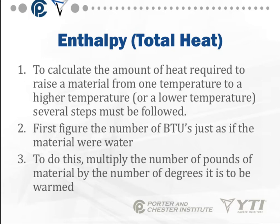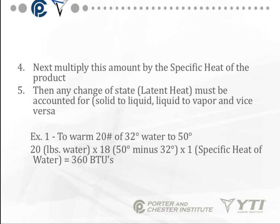First, we have to figure out the number of BTUs just as if the material were water. Water is a reference substance — it's the easiest, because it takes one BTU to raise one pound of water one degree Fahrenheit. The first step is to multiply the number of pounds of material by the number of degrees it's going to be warmed. Then we multiply that by the specific heat of the product. Then we add in any change of state, which is called latent heat.